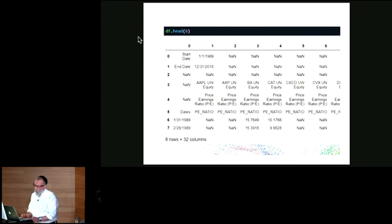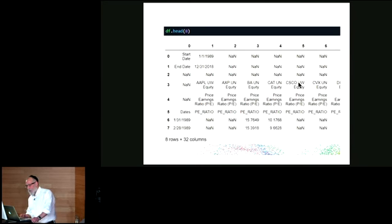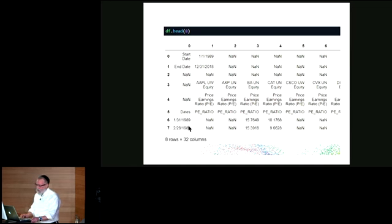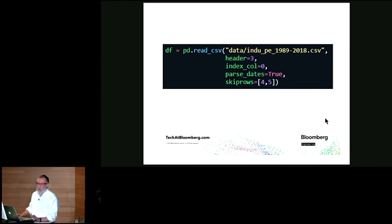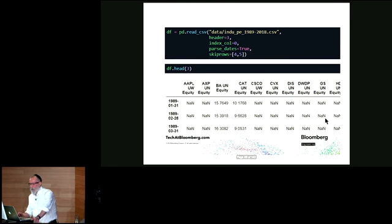When I initially read in the CSV file, it numbers the column headings and the index. Looking at it, I can see there's a start date and end date in the upper left corner, row three contains ticker symbols, rows four and five identify the field (price-earnings ratio), and the data begins below that. I call read_csv again, tell it the header is in row three, the index column is in column zero, set parse_dates=True to convert date-like values to date objects, and skip rows four and five. Now I have a much better-looking data frame with ticker symbols as columns and dates as the index.